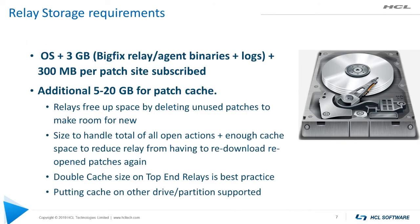For storage, plan for the OS plus about 3 GB for the BigFix relay agent binaries, logs, and related files. Add about 300 MB per patch site subscribed — so if you have Windows, Linux, and Mac patching, allocate 300 MB each. The cache is the most important: relays default to a low value like 1 GB, so raise that right away. I recommend a minimum of 5 GB for a patch cache, but ideally at least 10 GB on a site relay and double that on top-end relays. You can also put the cache on another drive or partition.